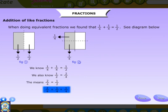2/4 = 1/4 + 1/4. Therefore, 2/4 = (1 + 1)/4, which equals 2/4.